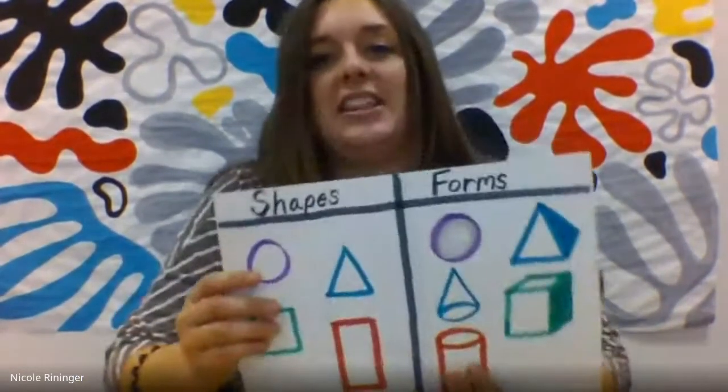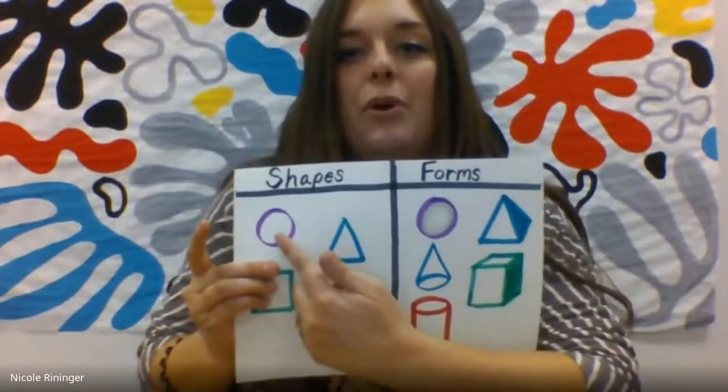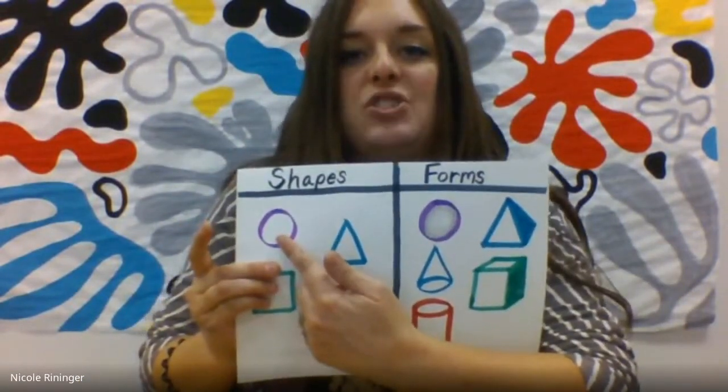So if you see a basketball or a baseball, that's a form called a sphere. Can you say sphere? Very good. Now I've shaded this in, and it looks like it's popping out more than the flat shape.